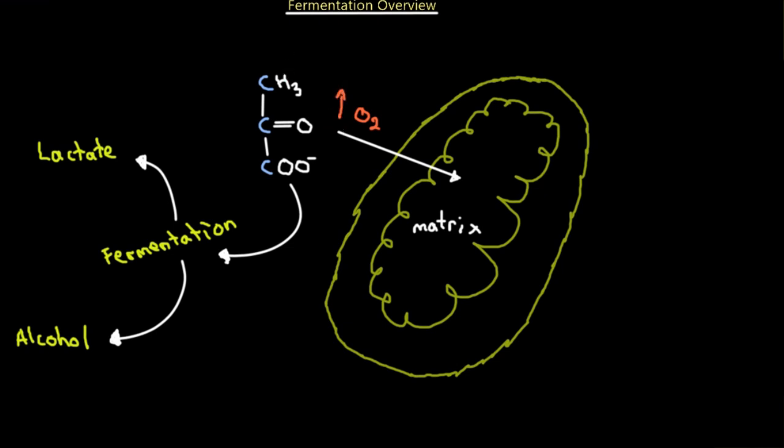So we could even have oxygen within the cell, but if it's not enough, then the pyruvate will not diffuse through the two membranes into the mitochondrial matrix to undergo aerobic respiration. If the oxygen levels are low, the pyruvate will stay in the cytosol. So it will remain just floating in the cell without entering any of the mitochondrial organelles, and it's going to undergo the process of fermentation.